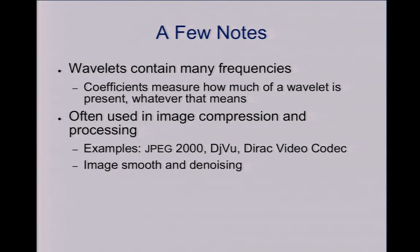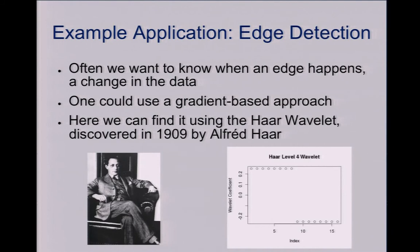People use them in image compression, denoising, and processing. Another quite often use is edge detection. I've had a problem when I worked with data trying to find changes in the data. We can use this Haar wavelet, actually the first wavelet discovered in 1909, to find edges.